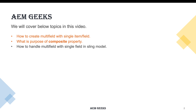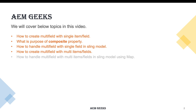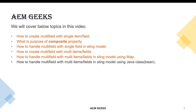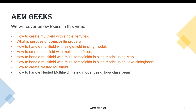I'll cover: how to create a multifield with a single item, what the 'composite' property is and its significance, and how to handle that multifield in a Sling Model. Then, how to create a multifield with multiple items, how to handle that using a Map, and how to handle it using a Java bean class. Finally, how to create a nested multifield and handle it in a Sling Model.